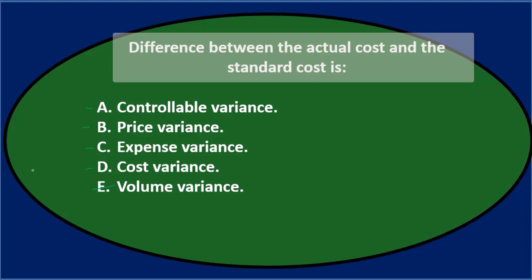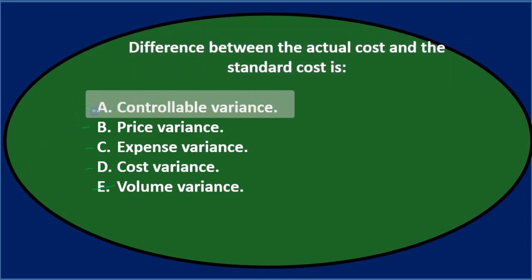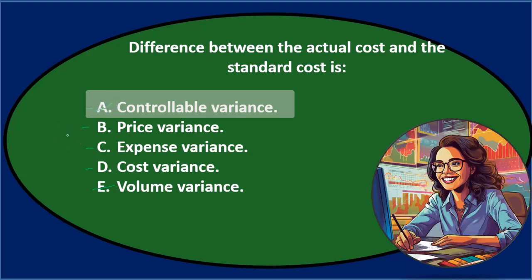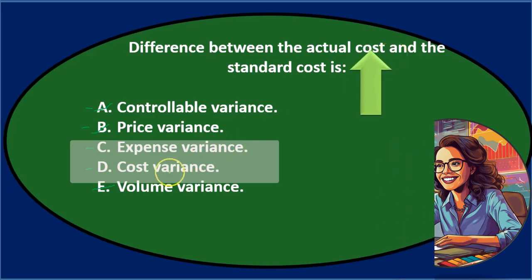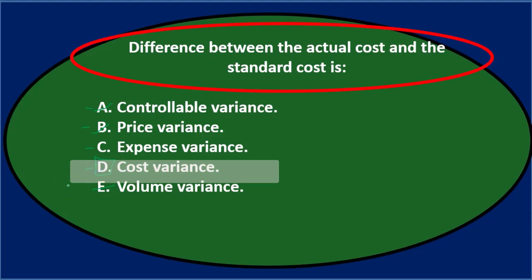The controllable variance sounds a little abstract, I'm going to say no. Between price variance, expense variance, and cost variance - expense and cost sound similar, price is the outside term. Price sounds a little bit different than cost or expense, so I'm going to say not B. Between C and D, D almost sounds too good to be right, but D is the correct answer. So the difference between the actual cost and the standard cost is D, the cost variance.